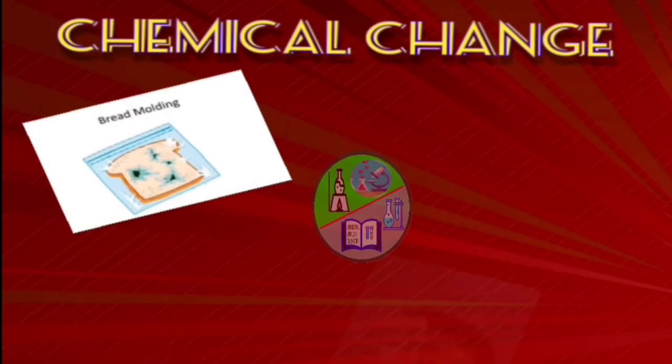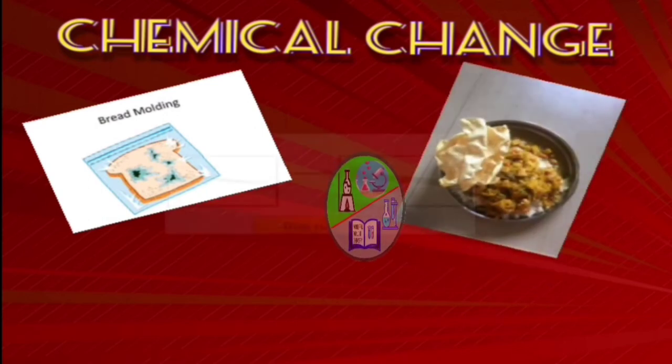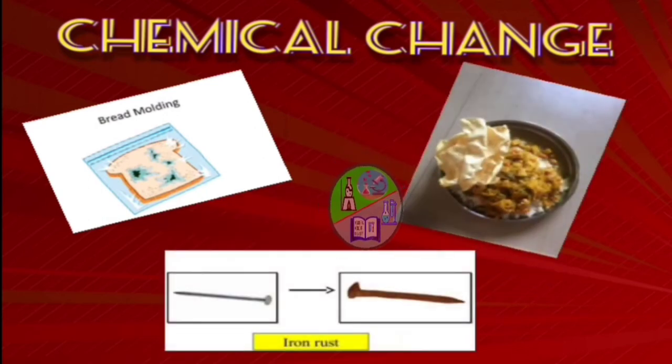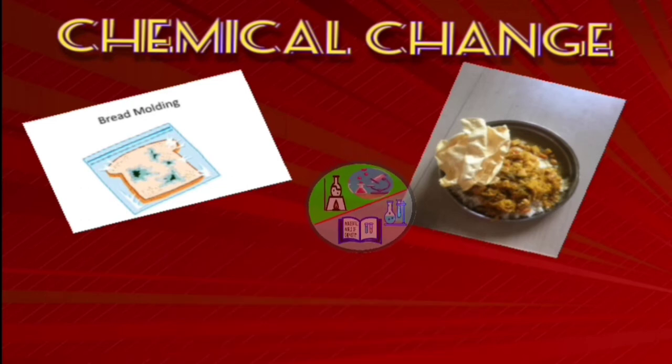Next is chemical change, which takes place with the formation of new substances. Example: rusting of iron, cooking of food, bread molding.